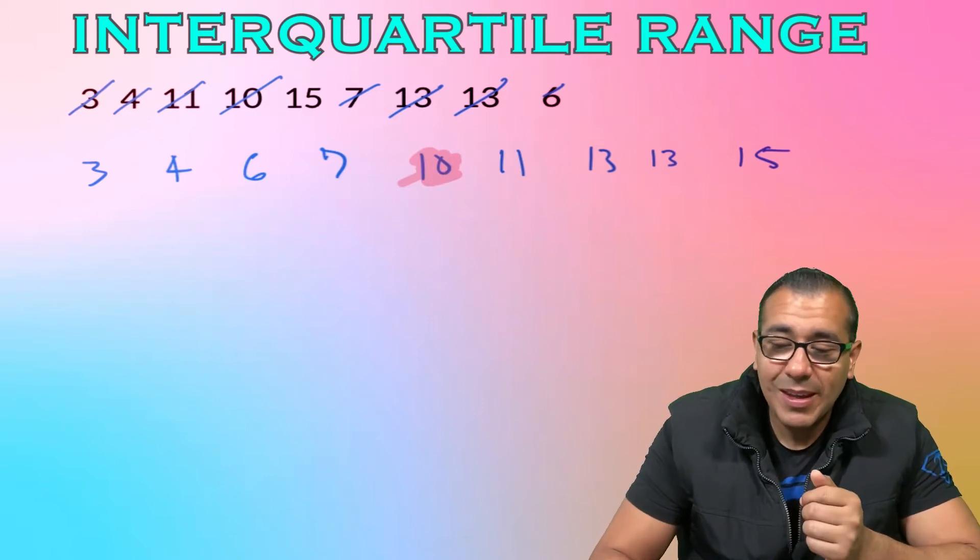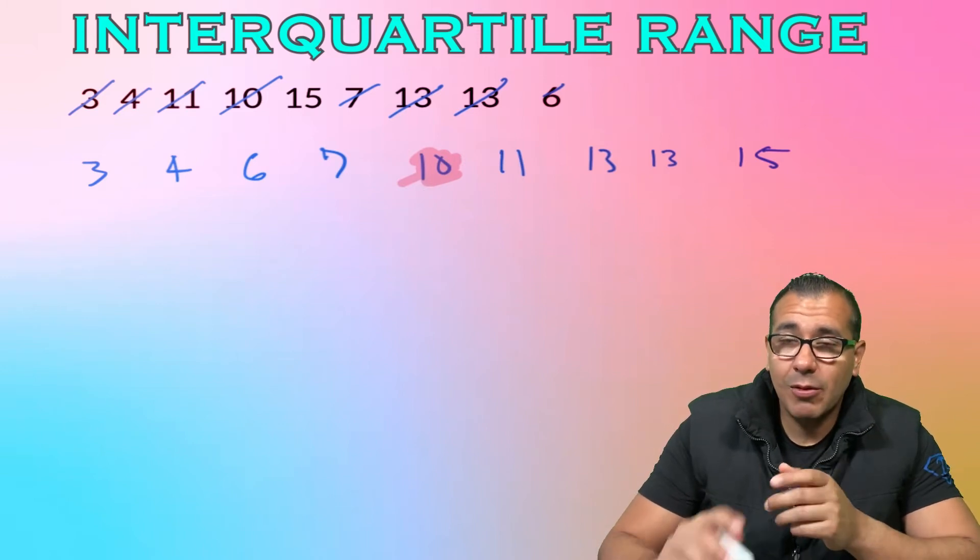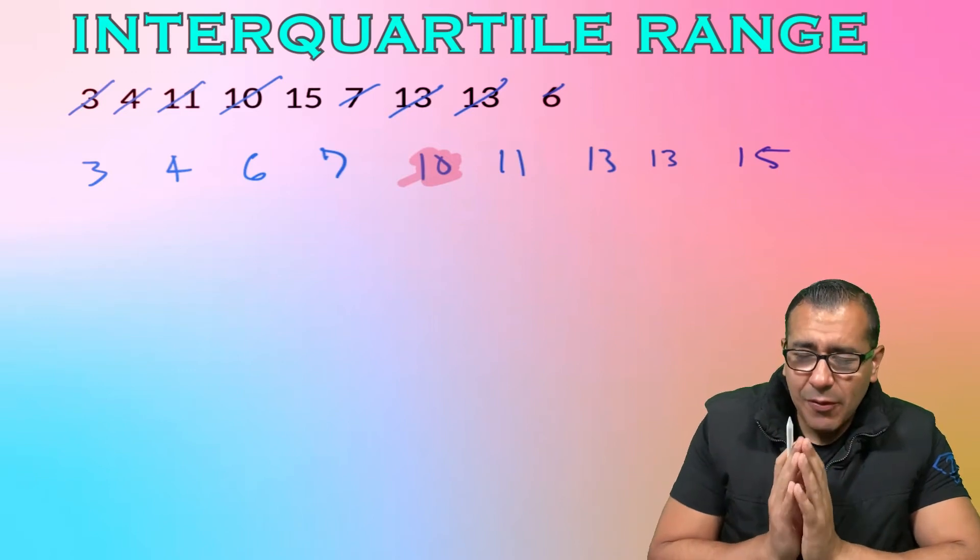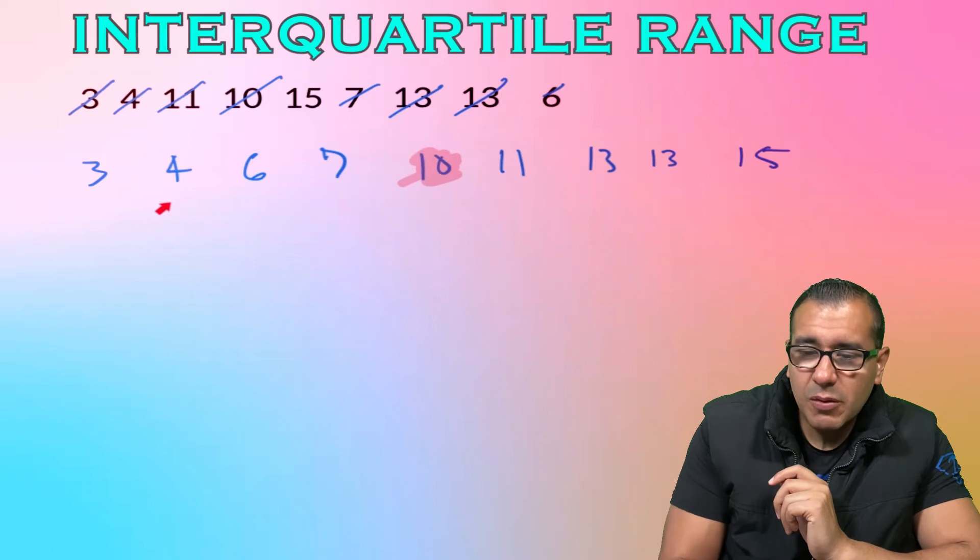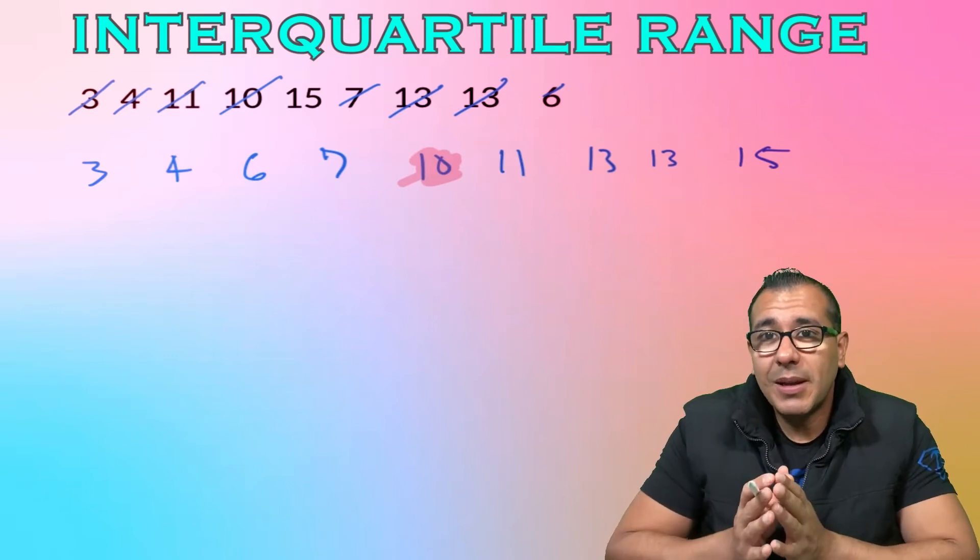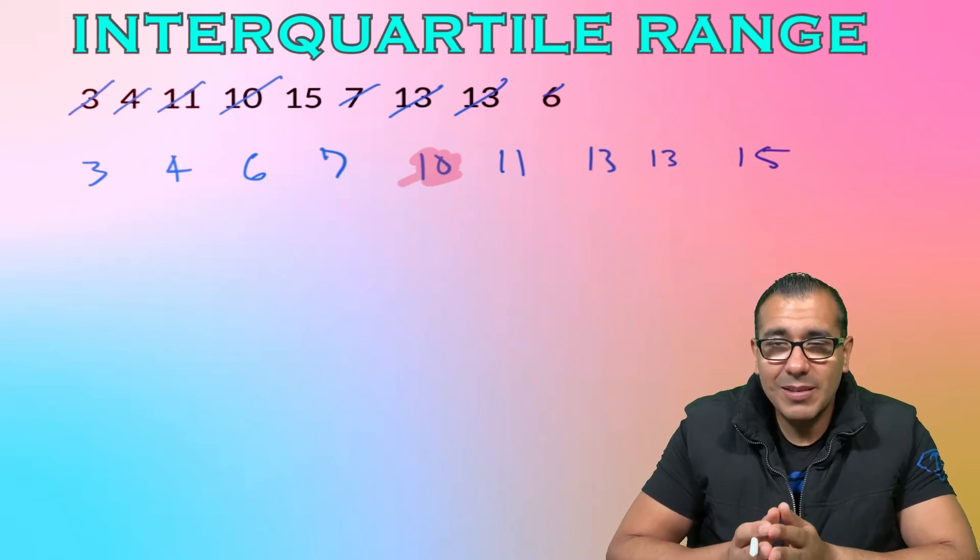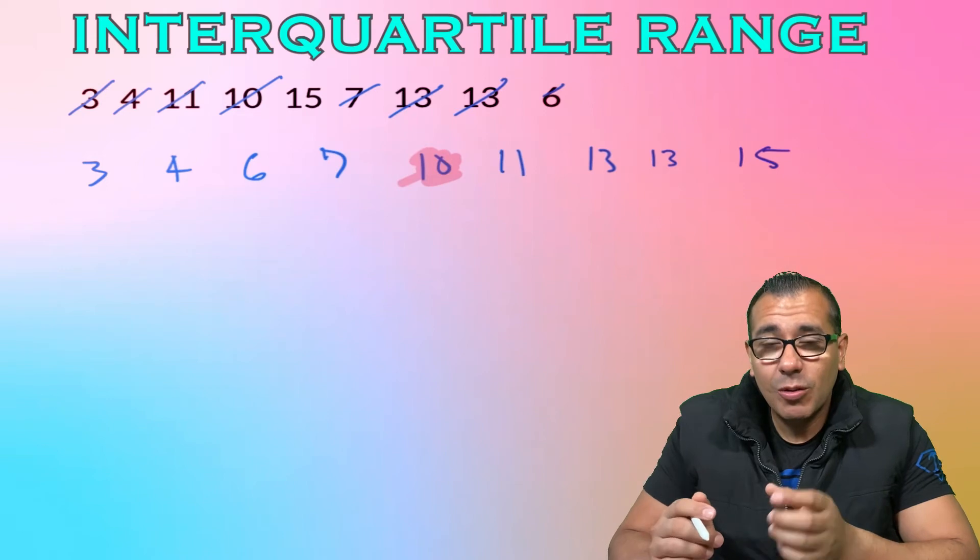In this case I have nine values, so it's right smack in the middle. This ten is that middle point, that boundary that splits them right down the middle. This we call our median, and we're also going to call this Q2.